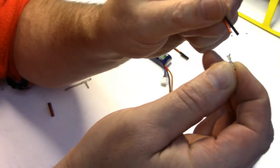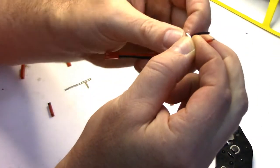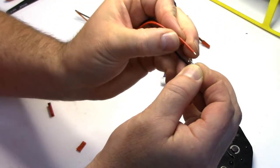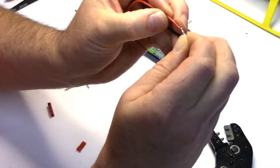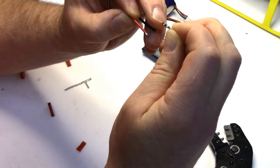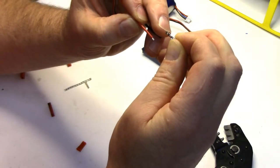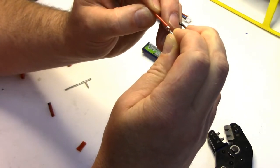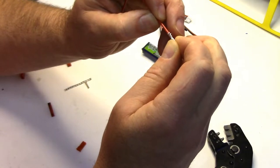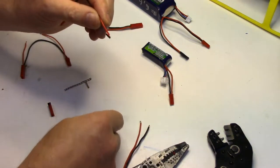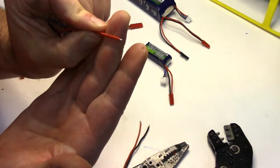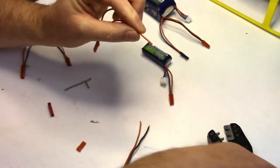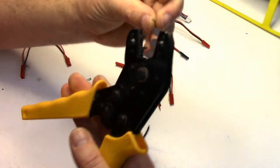You basically want enough wire exposed that it will just fit into the pin. This side of the crimp is actually grabbing the wire insulation and then the inner one crimps over the actual wire strands. So that's about three millimeters, just over an eighth of an inch that you strip off.